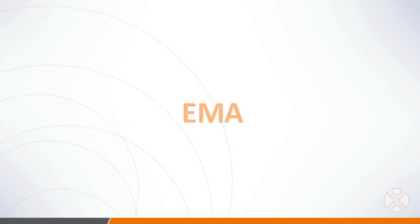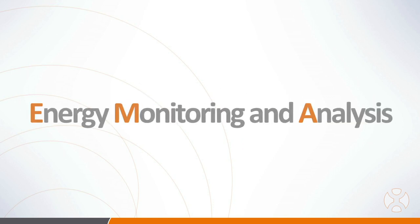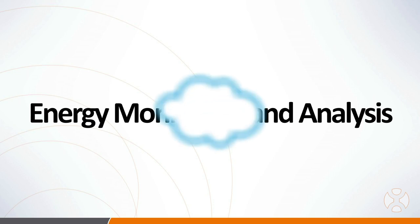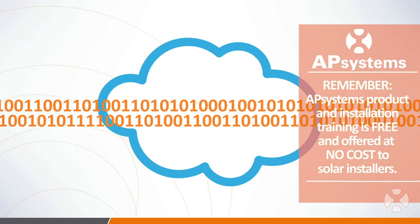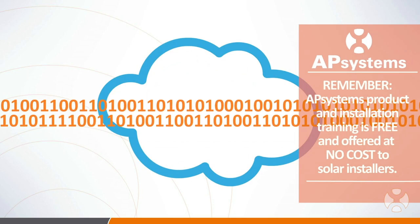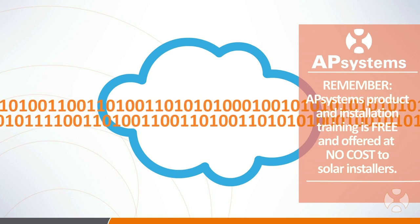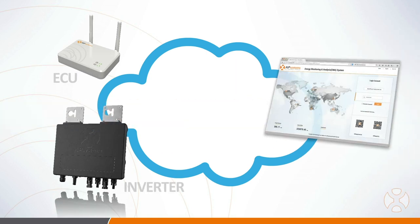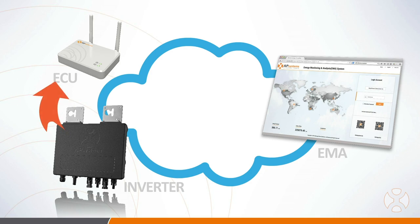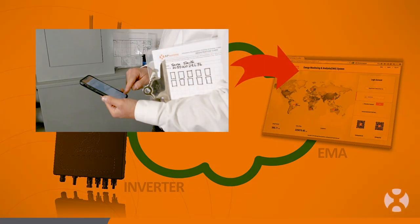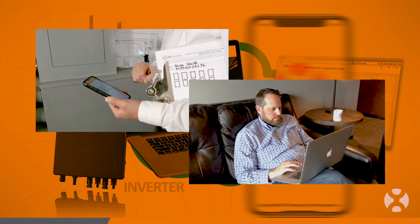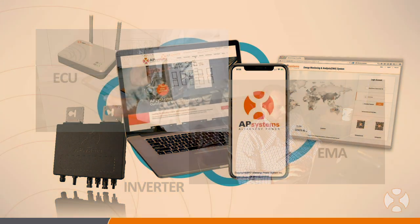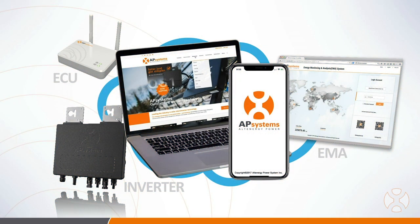The EMA, which stands for Energy Monitoring and Analysis, is the AP Systems cloud platform for recording and displaying the solar system performance. Once commissioned, the ECU, or Energy Communication Unit, will act as the gateway between the microinverters and the EMA platform, allowing installers and end users to see the solar array power production from any internet-connected computer or smartphone.